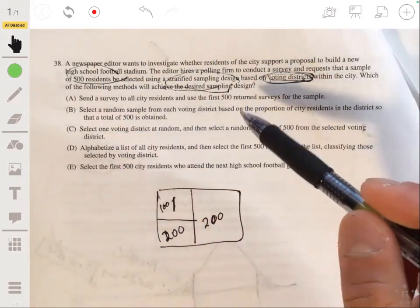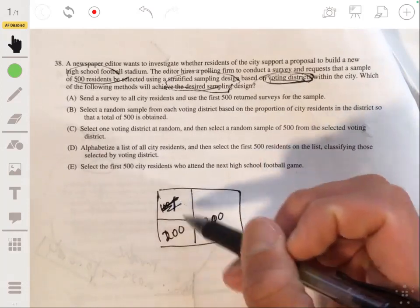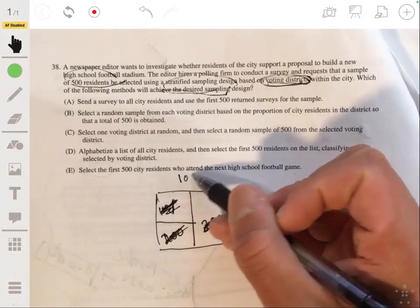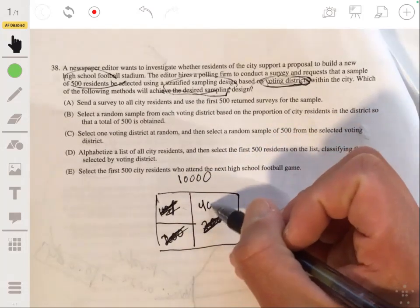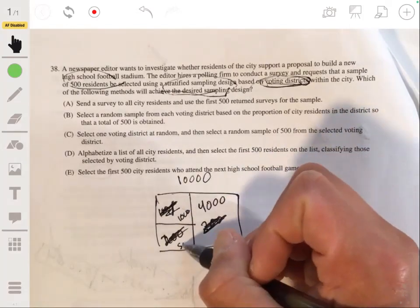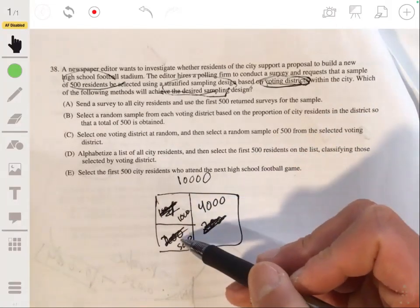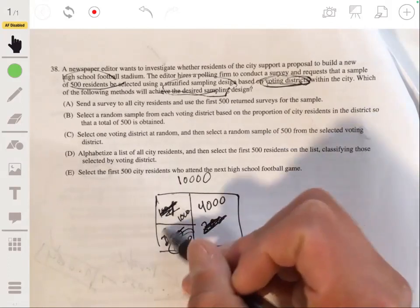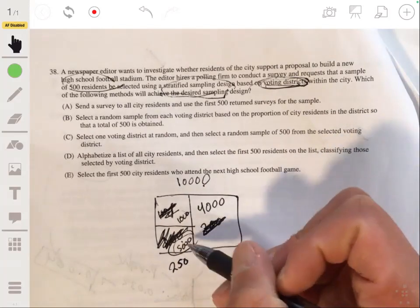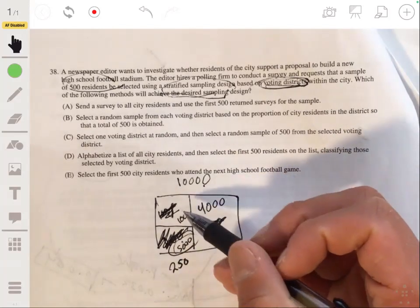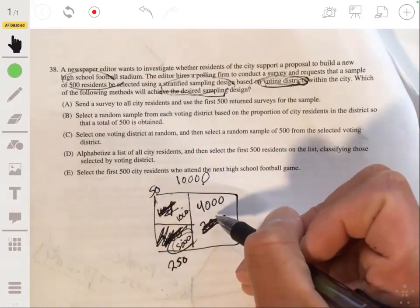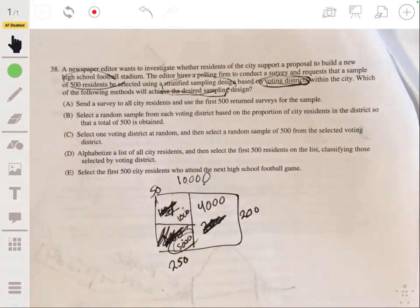For example, let's say you have a city of 10,000 people. 4,000 of them are in this district, 1,000 is here, and then 5,000 over here. So this district makes up half of the population, so you would take a sample of 250 from here. From this smallest one, it's only 10%, you would only take 50. And then you would take the other 200 from here, because you want to make them representative based on how big they are.